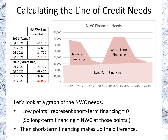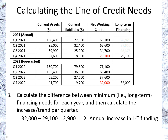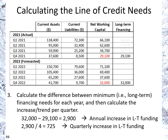Before we figure out the short-term financing, we have to figure out what the long-term base level is going to be for each of the quarters. We have the low points representing the minimum long-term financing. We calculate, based on the trend, how much financing is going to change — on a yearly basis and then on a quarterly basis. The yearly change is $2,900, and the quarterly change is one quarter of that: $725.